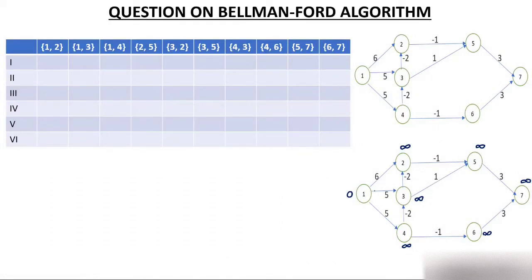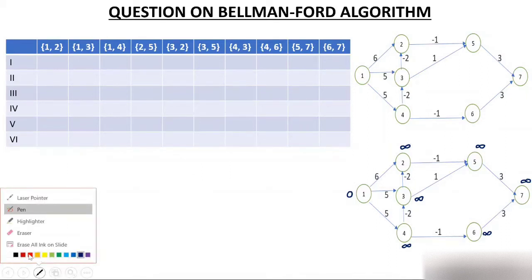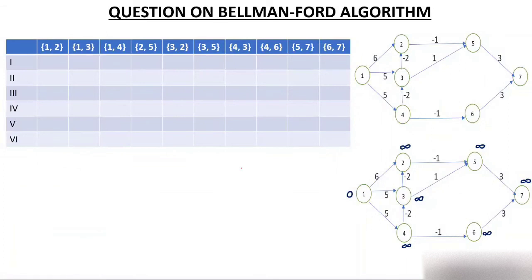First pass, relax edge 1-2: source weight is 0, edge weight is 6, so 0 plus 6 is 6. Is 6 less than infinity? Yes, so relax — node 2 becomes 6.